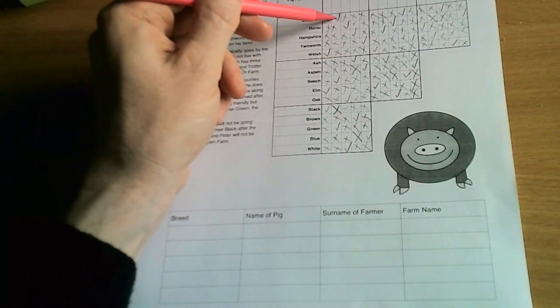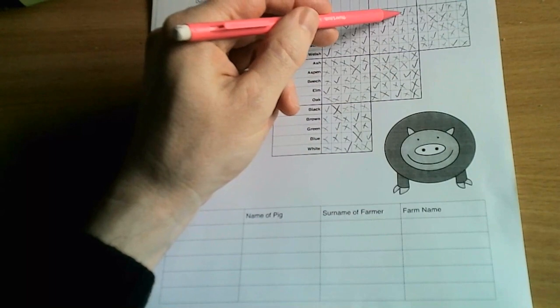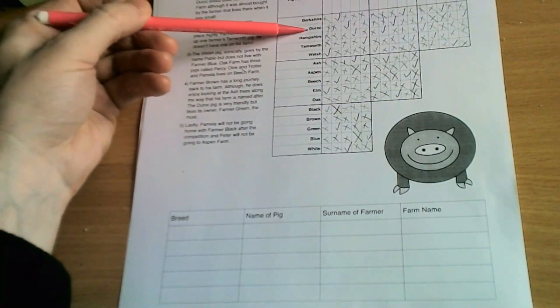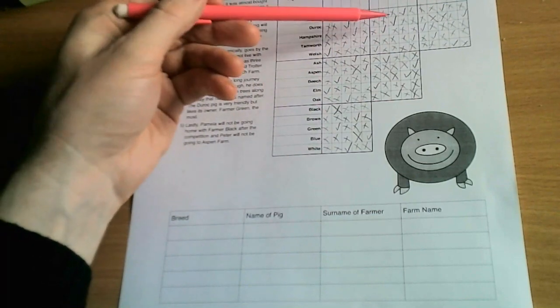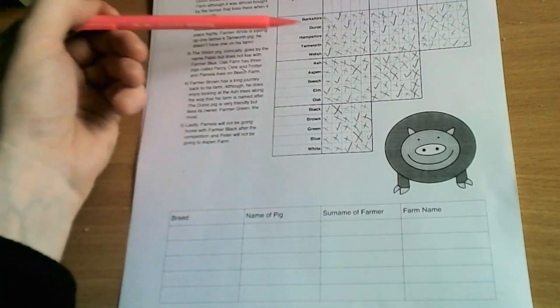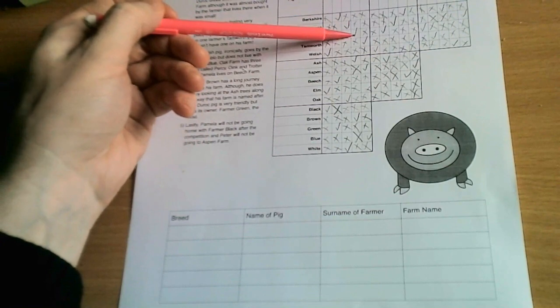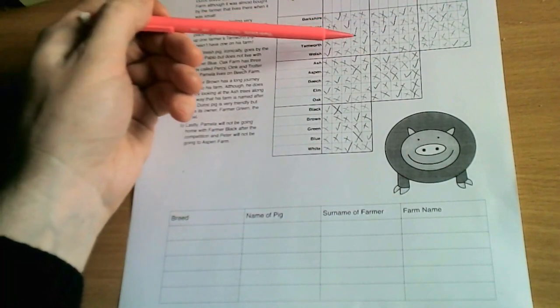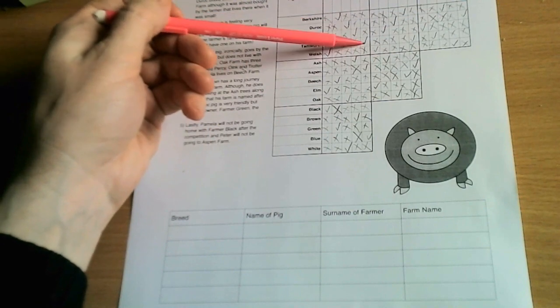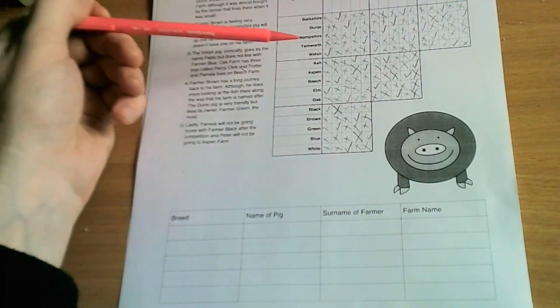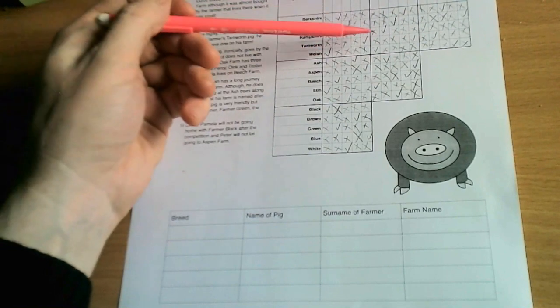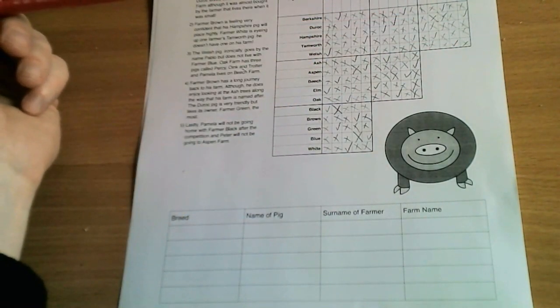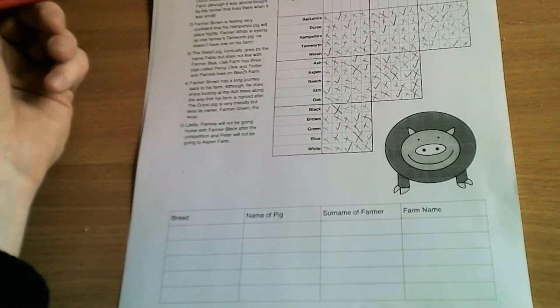So we know here that the Berkshire pig is called Pamela, it's with Farmer White at Beech Farm. The Duroc pig is called Percy with Farmer Green at Oak Farm. The Hampshire pig is called Peter with Farmer Brown at Ash Farm. The Tamworth pig is called Petunia, lives with Farmer Blue at Aspen Farm. And the Welsh pig is called Pablo, lives with Farmer Black at Elm Farm.